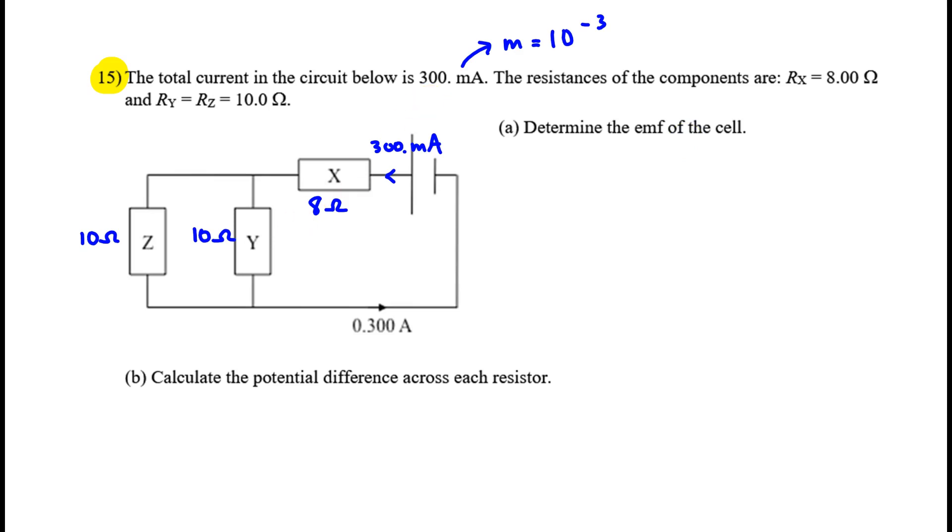We have to find the EMF of the cell. Well we know the individual resistances, we know the total current, so we're looking for total potential difference, which is equal to the EMF. We can use this equation, but before we use it, we have to find our total. The current passes through X, then it splits and passes through that parallel circuit, it combines back up, and it's done.